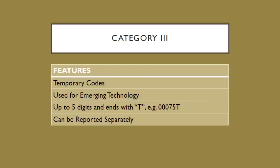Category three codes are temporary codes used for emerging technology. They are up to five digits and end with the letter T — for example, 0075T. The main thing you need to know is that it ends with a T.